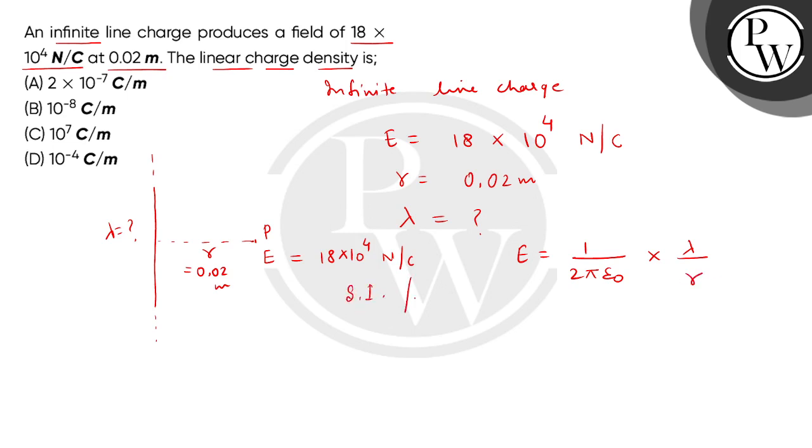If we consider SI system and air medium, 1 by 4 pi epsilon 0 equals 9 multiplied by 10 to the power 9.